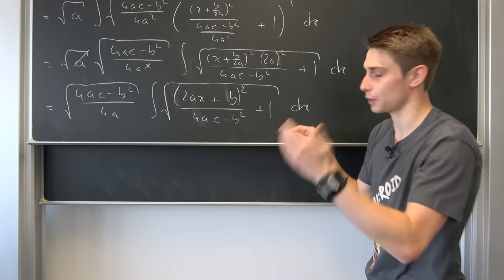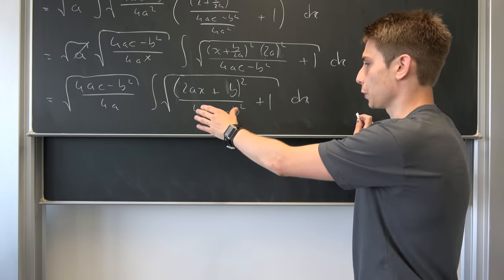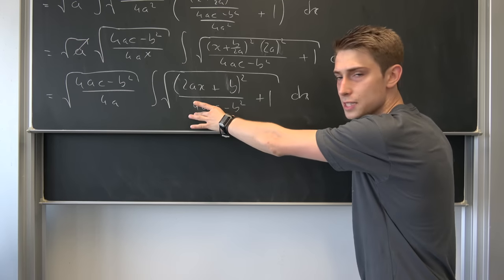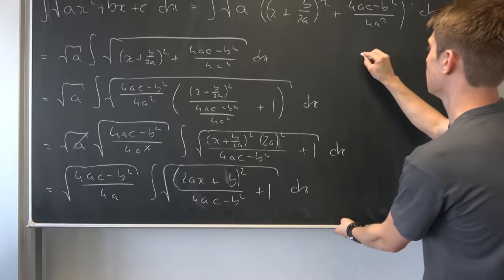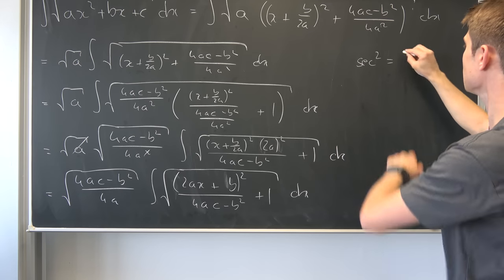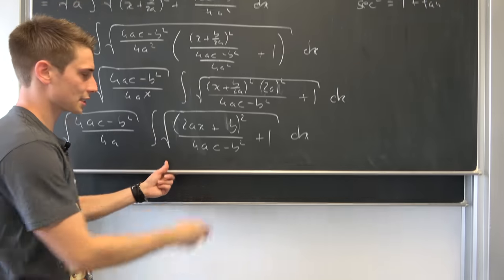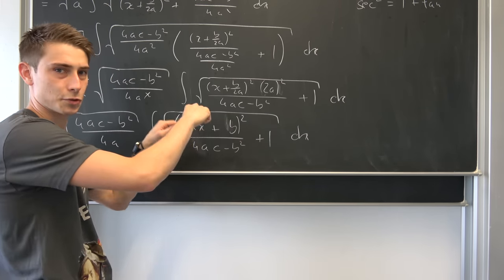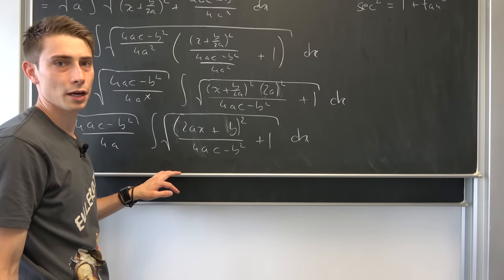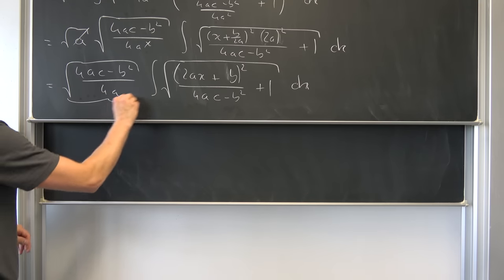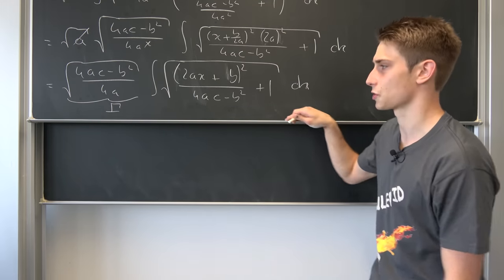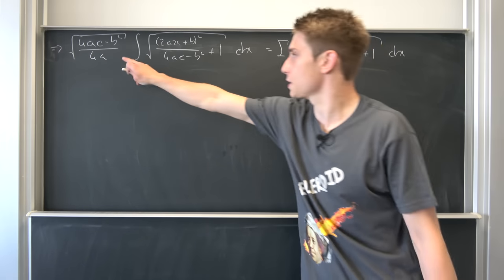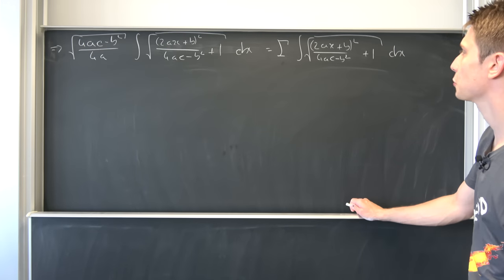We could use trigonometric identities or hyperbolic identities. Why not go with tangent in this case? If we let this first term equal to tangent squared, we know that secant squared is nothing but 1 plus tangent squared. So we can turn this into secant squared, take the square root and end up with just a secant. This could potentially turn out to be a mess, so I'd like to rename this first factor as gamma — I really don't care what you call it.